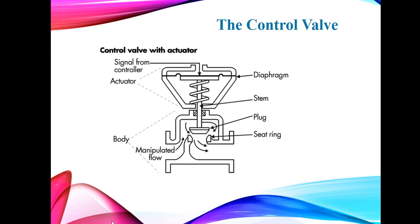The control valve has an upper part called the actuator and a lower part called the body. The diaphragm is connected to a plug which is connected to the stem. This stem with the plug on the end moves up and down depending on the pressure the diaphragm is subjected to. As the stem moves up and down, the opening where the fluid passes through is regulated, and if the opening is regulated, the flow of fluid is also regulated — all through air pressure on top of the diaphragm.